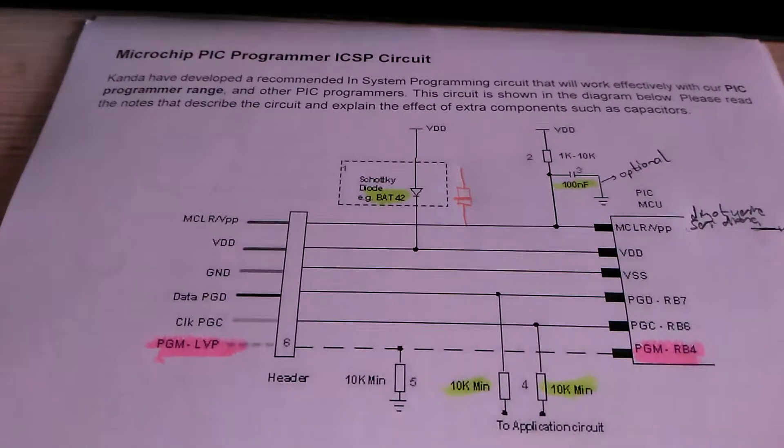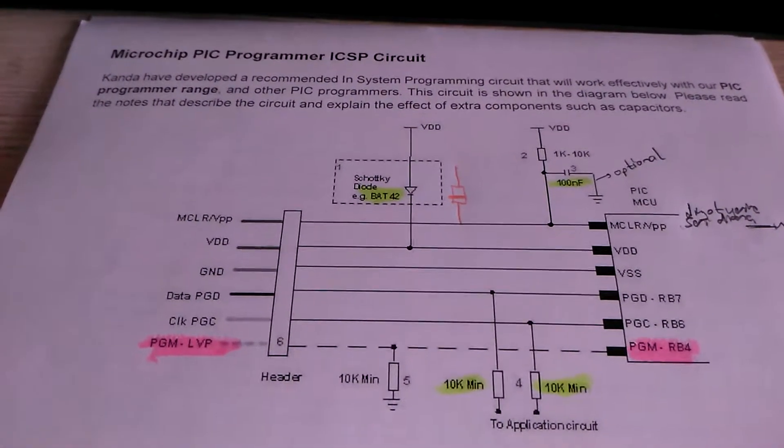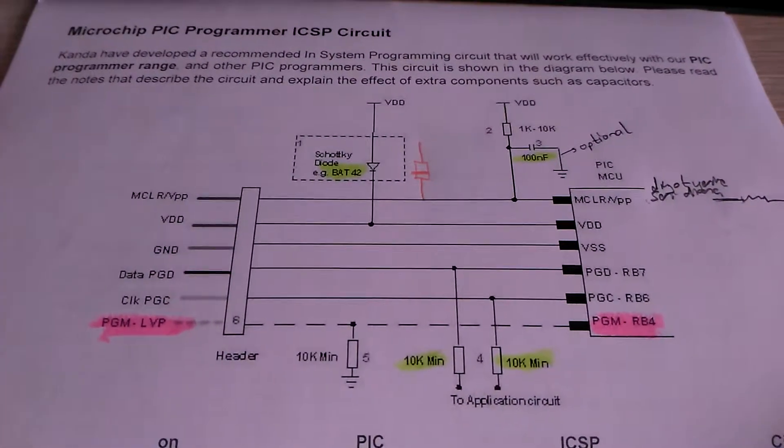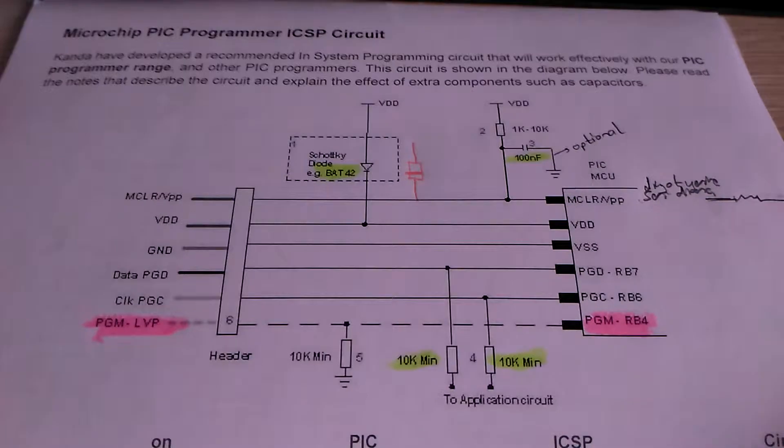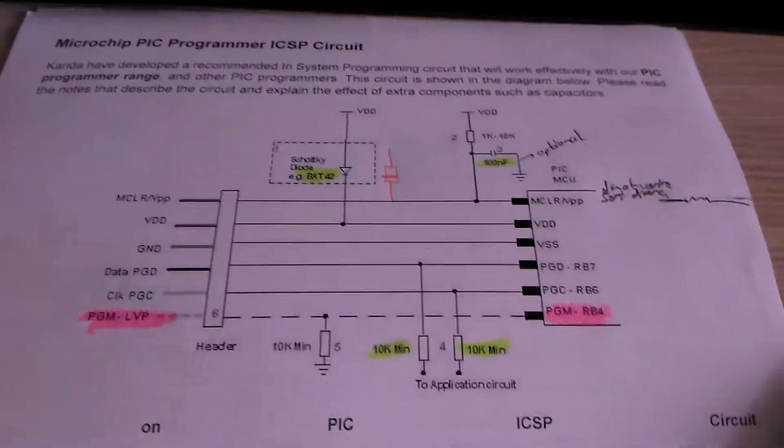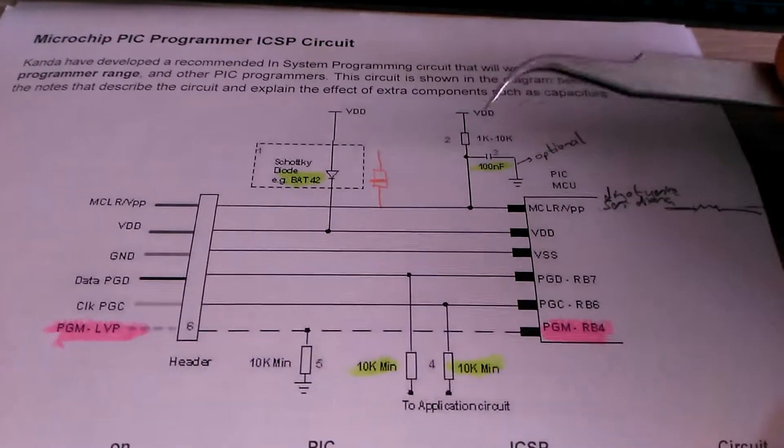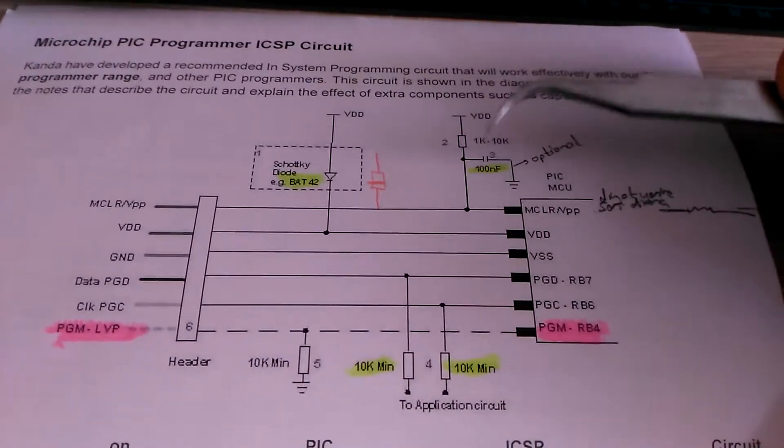It saves the circuit from excessive voltage during programming of the PIC. The second important component is the 10kΩ isolation resistor.